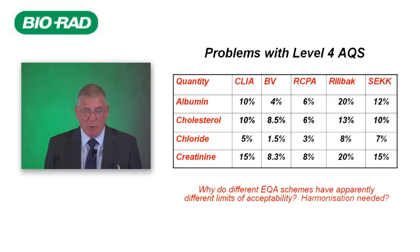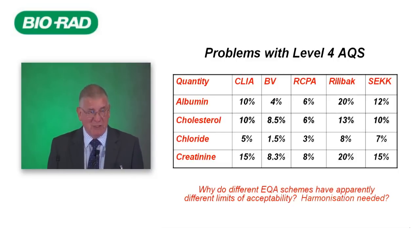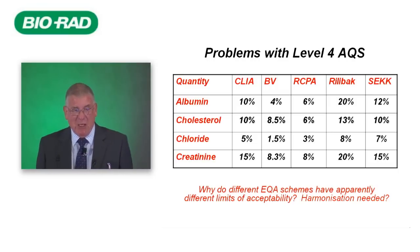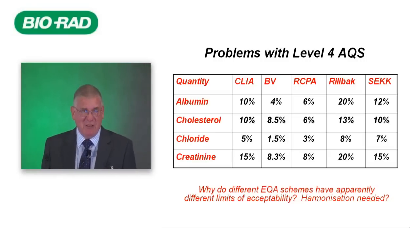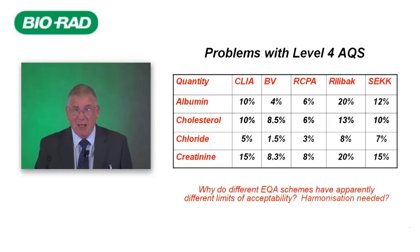An example of problems with using EQAS or PT allowable limits: here are four quantities widely measured in laboratory medicine. Shown are allowable limits from the US CLIA based upon biological variation, the Australian Royal College of Pathologists of Australasia, Germany's Rilibäk, and the Czech Republic. These are very, very different, and it is really quite difficult to understand why different EQAS schemes have apparently very different levels of acceptability. As we will discuss this afternoon, harmonisation is perhaps needed and is achievable.